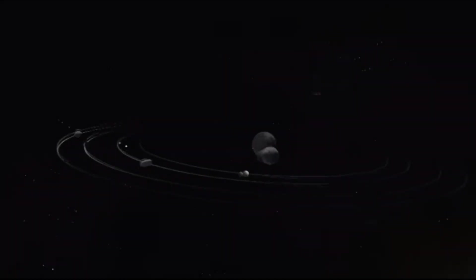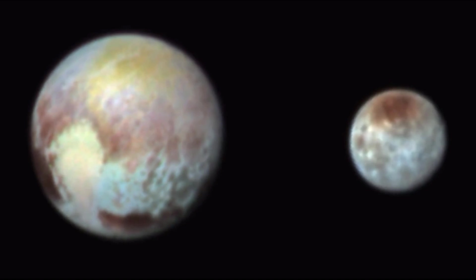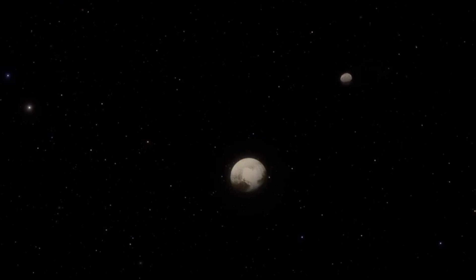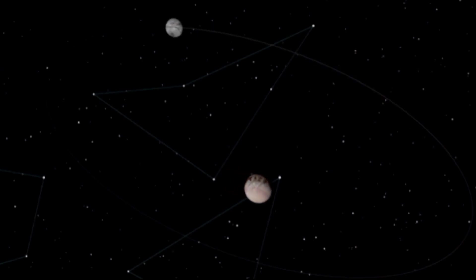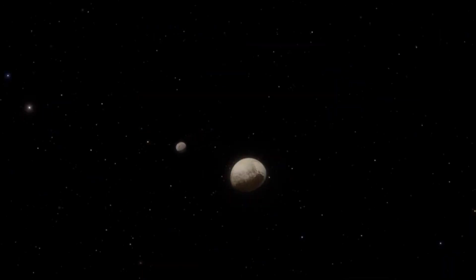Pluto is known to have five moons, among which Charon is the largest and most interesting. It is almost half the size of Pluto, but its mass is about one-eighth of Pluto's mass. This creates a unique situation where the center of mass of the Pluto-Charon system is outside the surface of both bodies, resulting in their mutual rotation around this point rather than Charon's traditional orbit around the planet.